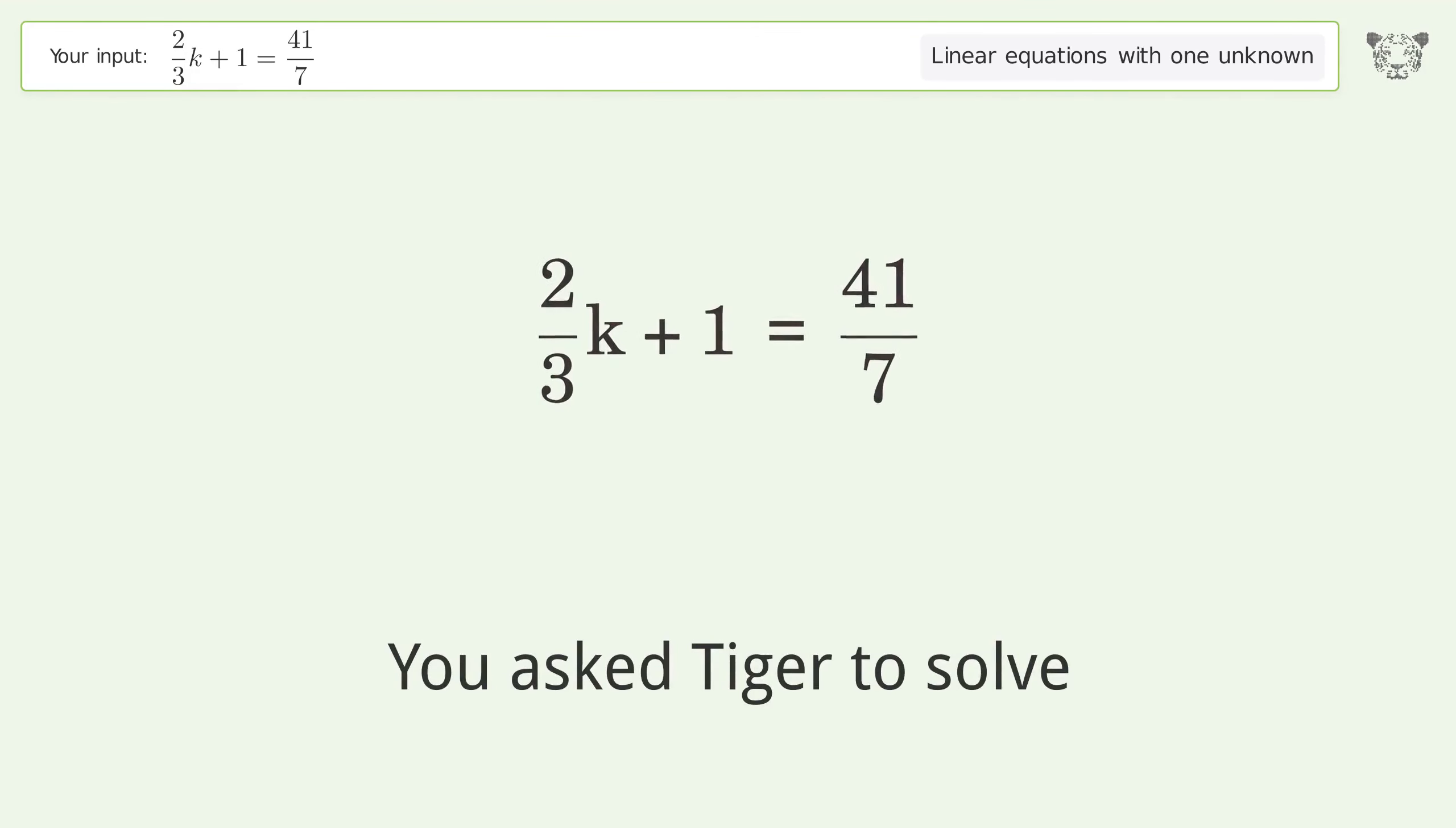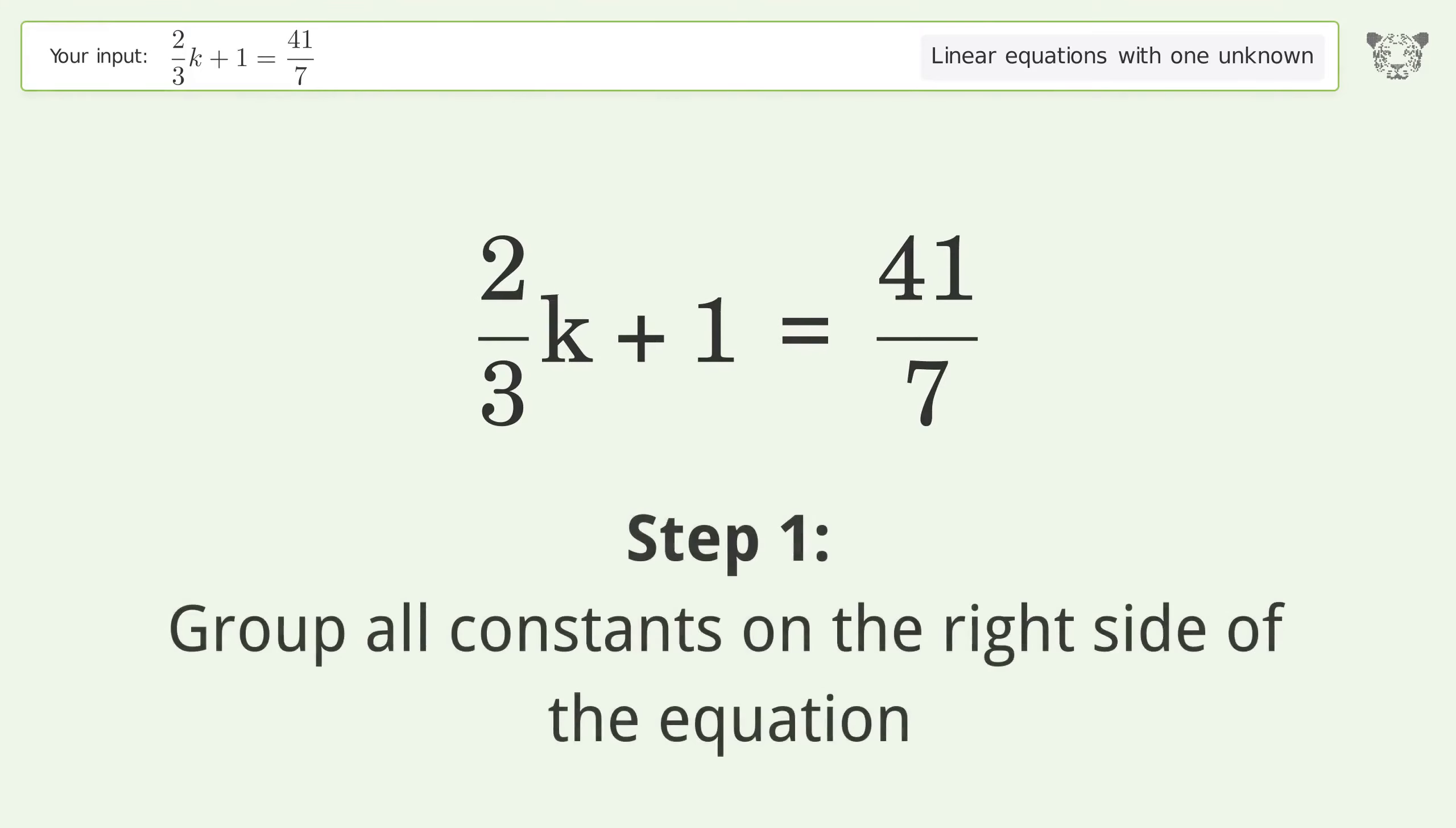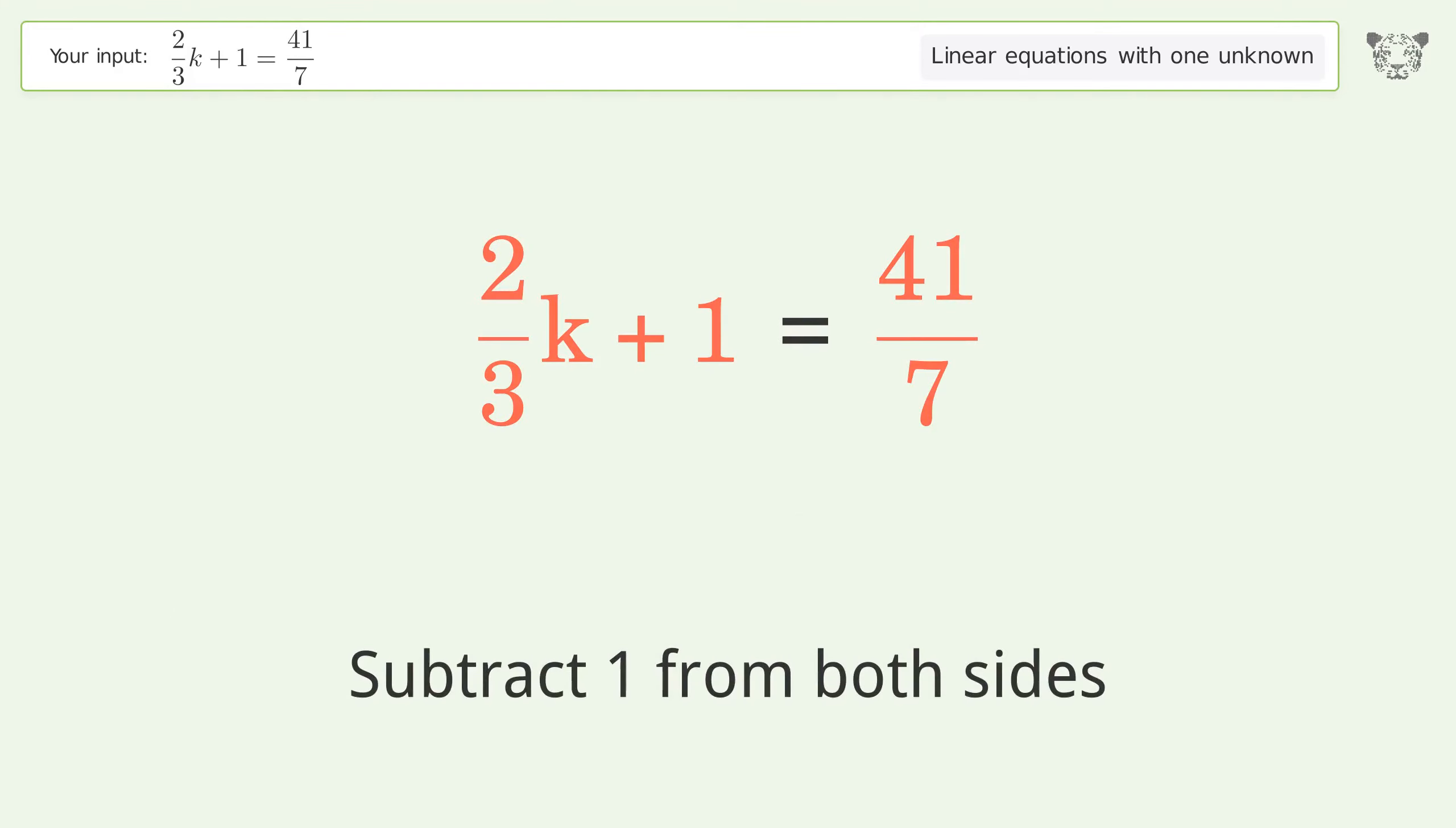You asked Tiger to solve this. This deals with linear equations with one unknown. The final result is k equals 51 over 7. Let's solve it step by step. Group all constants on the right side of the equation. Subtract 1 from both sides.